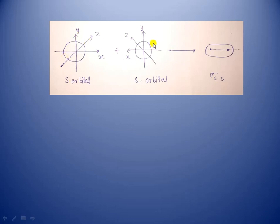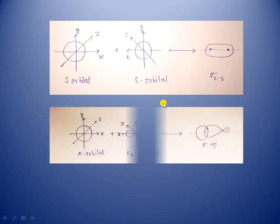Here you can see two s orbitals overlap along the x-axis forming sigma s-s covalent bond, and the charge density is about its bond axis forming a cylindrical shape. Next, one s orbital overlaps with px orbital forming sigma s-p covalent bond. Here the charge density is along the bond axis forming a cylindrical shape.